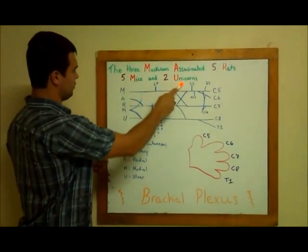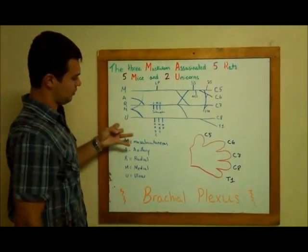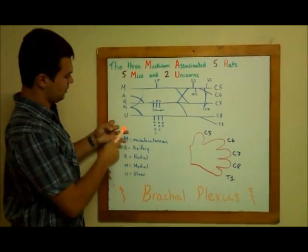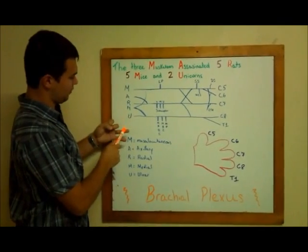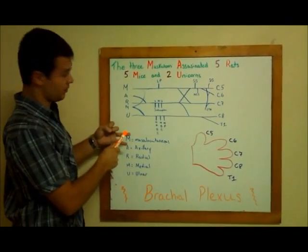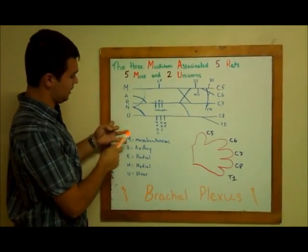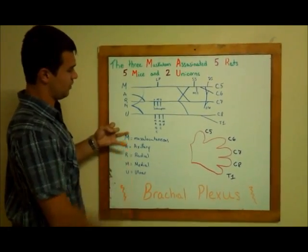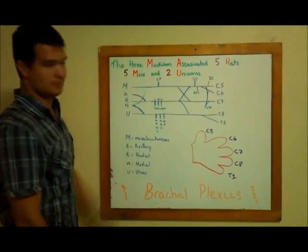And you have your two unicorns — make your two unicorns. Your ulnar comes from your C8 and T1. And that's it. That's how you do your terminal endings.